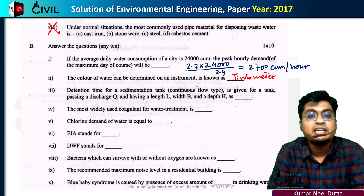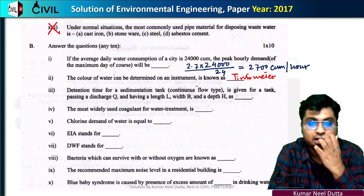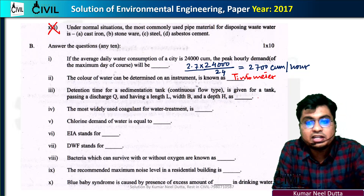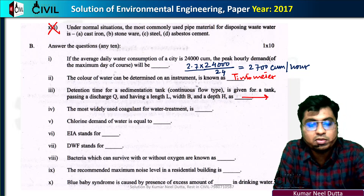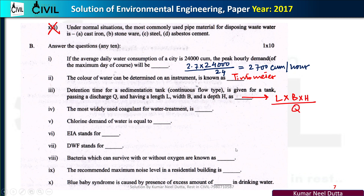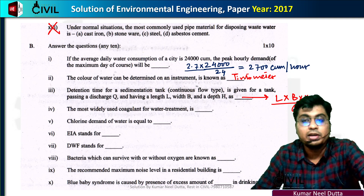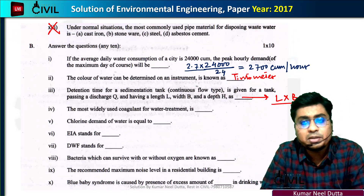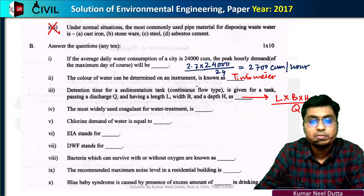The Detention Time for a Sedimentation Tank is given by the formula: Detention Time equals the volume of tank divided by discharge — that is, L × B × H divided by Q.